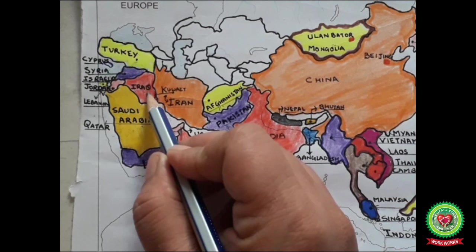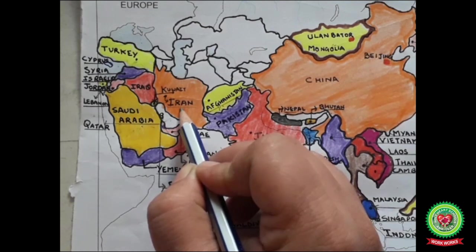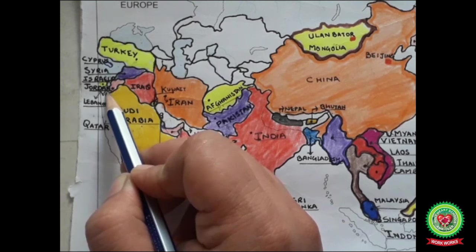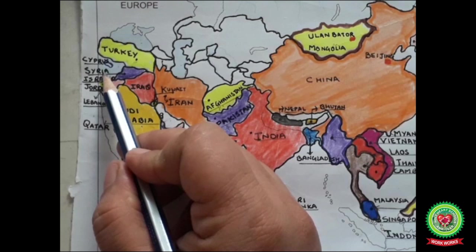Iraq is a country in Western Asia bordered by Turkey to the north and Iran to the east. The country is known for its poets and painters; its capital is Baghdad. Iran, also called Persia, is a country in Western Asia with 83 million inhabitants; its capital is Tehran. Jordan is famous for Petra — known as the Rose-Red City, one of the Seven Wonders of the World. Jordan is also called the Land of Seven Hills; it has the shortest coastline in the world. Its capital is Amman.